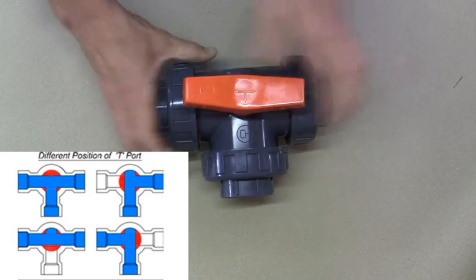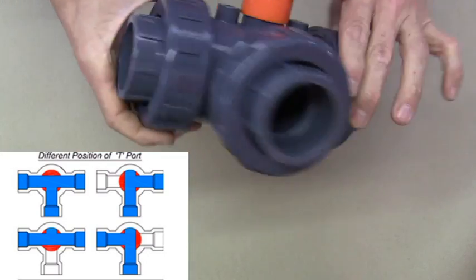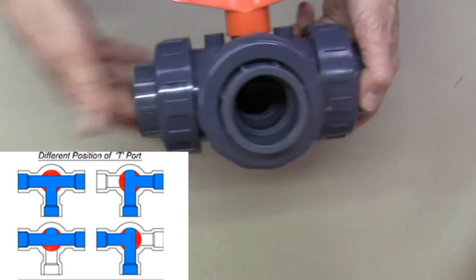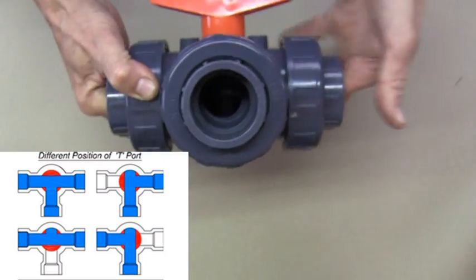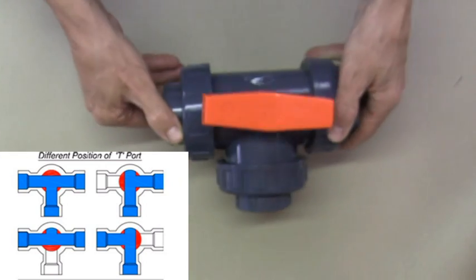For example, in this handle position we have the valve running all the way through that way, so we can then use it as a mixing valve where the water or fluid flows in these two and comes out this way or comes in this way and splits and goes out those two there.